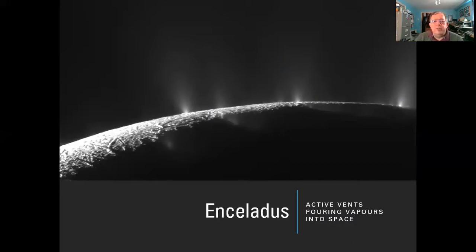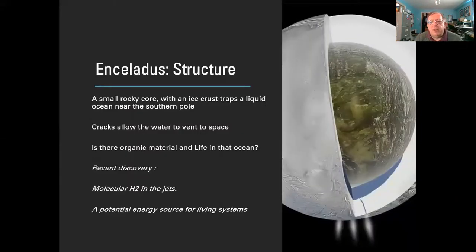Cassini flew through the plumes of Enceladus and detected organic-rich material, hydrogen gas, and all sorts of interesting chemistry — all pointing to possible biological activity down inside a liquid ocean in a protected biosphere underneath the ice. A cutaway view of Enceladus suggests the southern ocean, where water is being vented to space, may not cover the whole moon but could be a very large ocean on one side.